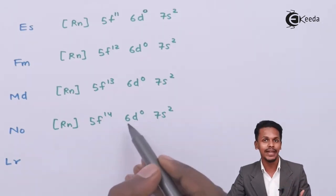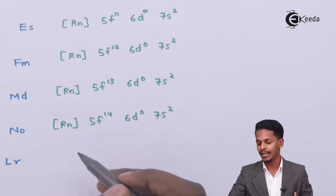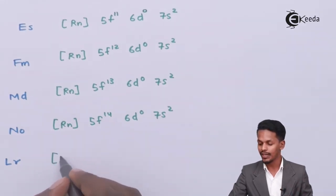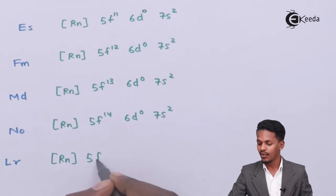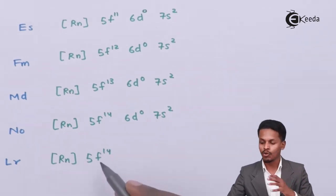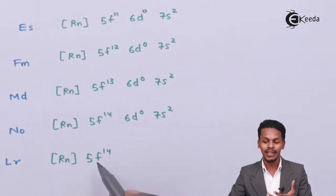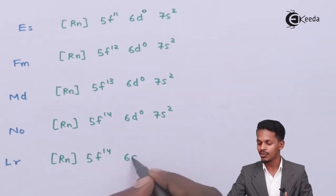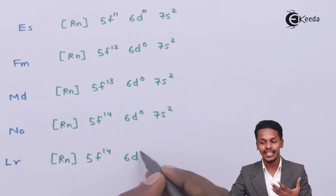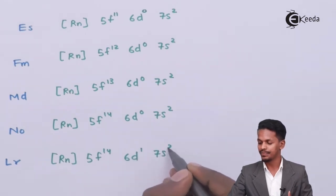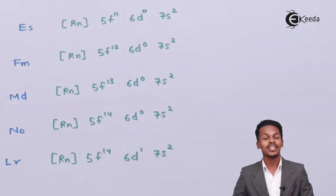For lawrencium, the configuration is [Rn] 5f¹⁴ 6d¹ 7s². Since the f orbital is already completely filled, there is no room for the extra electron there, so the last electron gets added to the 6d orbital.